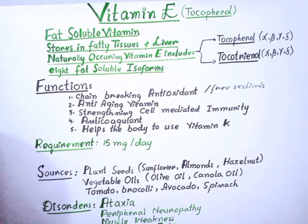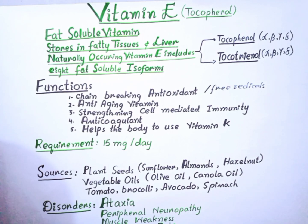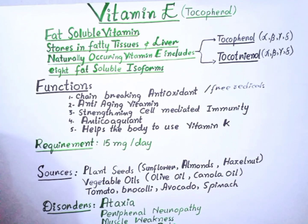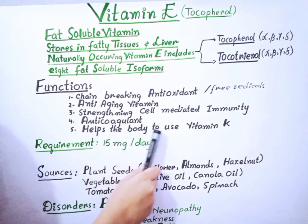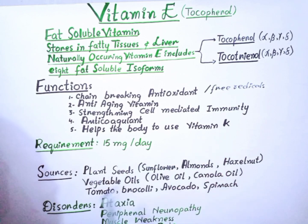One of the well-known functions of Vitamin E is that it acts as an anticoagulant, which means it prevents blood clotting. Vitamin E is a potent anticoagulant. Blood clots that form in the arteries can sometimes lead to heart attack and stroke, so Vitamin E helps prevent deep vein clots.